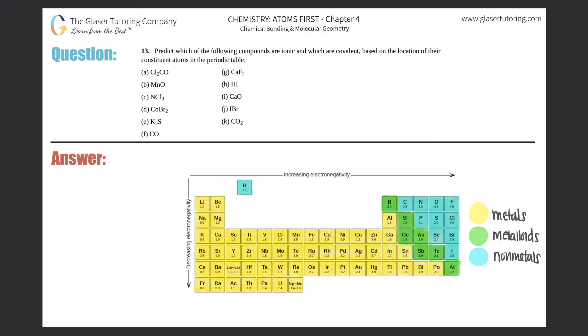Number 13. Predict which of the following compounds are ionic and which are covalent based on the location of their constituent atoms in the periodic table. And then we have A through K.